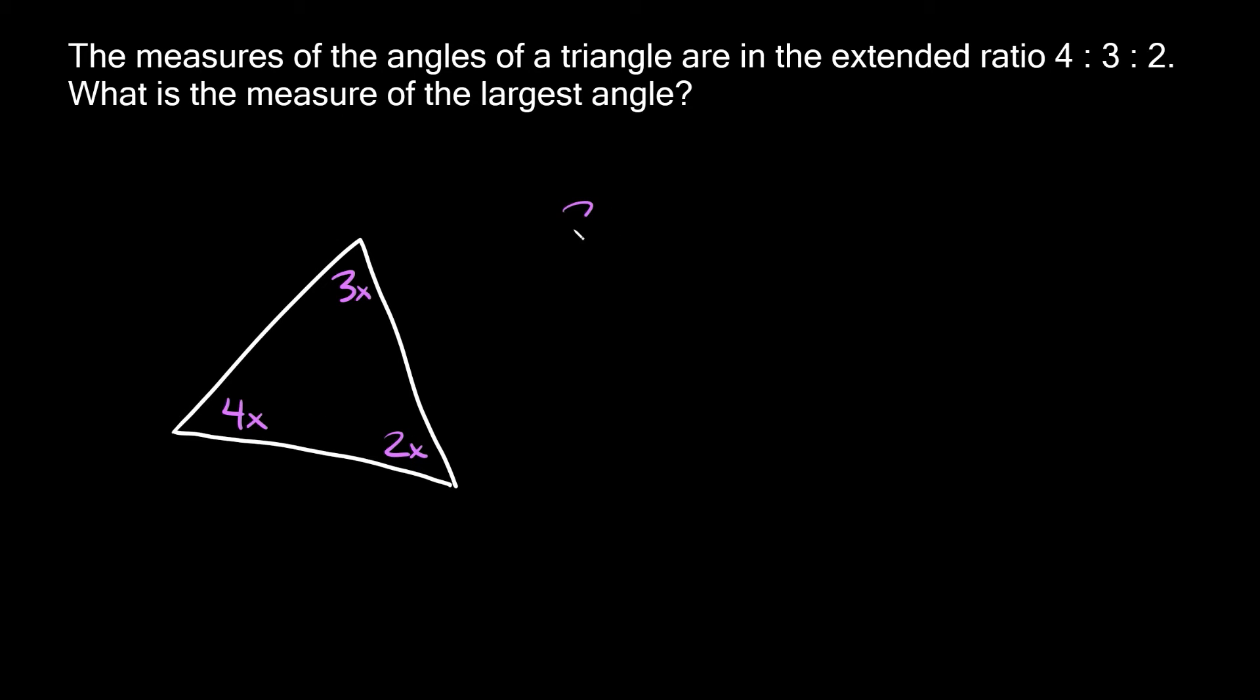So here we can say 2x plus 3x plus 4x equals 180. So adding these up together, 2 plus 3 is 5, and 5 plus 4 is 9. So we get 9x equals 180. Then we can divide both sides by 9, so we get that x equals 20.